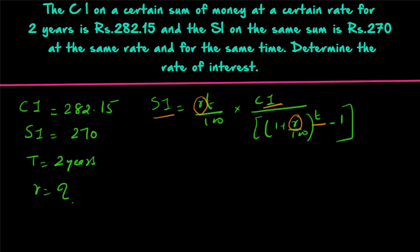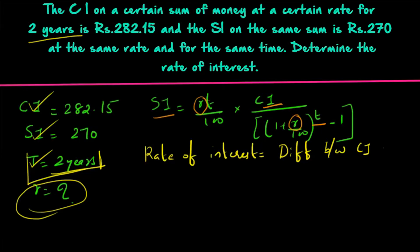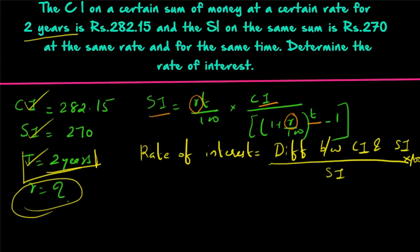Today I'll discuss a shortcut method for these kinds of questions. The key here is that time is equal to 2 years. This shortcut formula is applicable only when time is equal to 2 years. When compound interest, simple interest, and time are given and rate of interest is asked, we use the direct formula: rate of interest equals 2 times the difference between compound interest and simple interest, divided by simple interest, into 100.